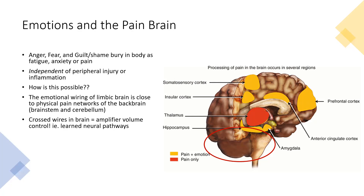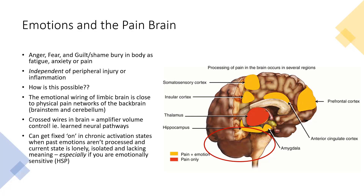Daniel Clauw has done a brilliant presentation on this, likening it to an amplifier volume control turned way too high — all inputs are perceived as pain even if they're not intrinsically painful. That's how chronic pain feels: everything is painful and little things make a big difference. These pathways are actually learned from past experience, so it's not intrinsic to the person — crossed wires happen through past experience sensitizing us into a fixed 'on' state.